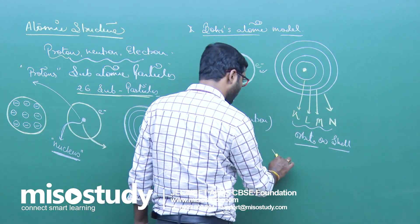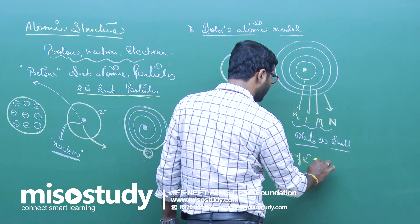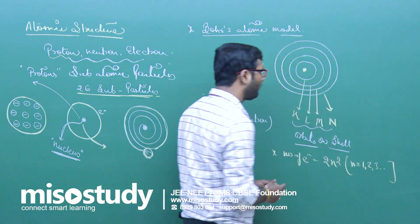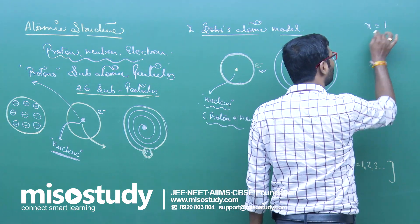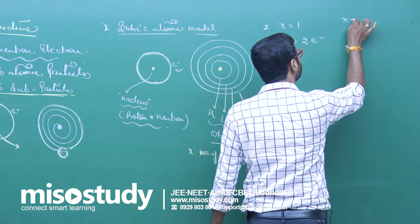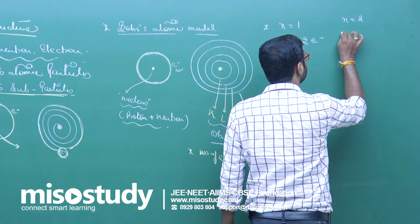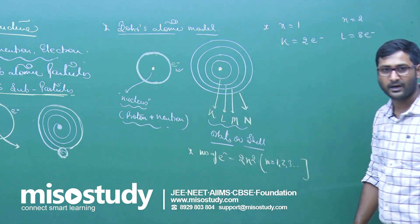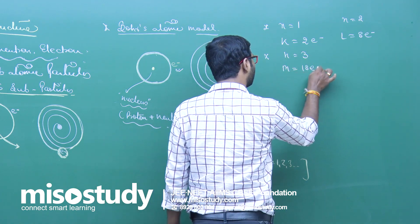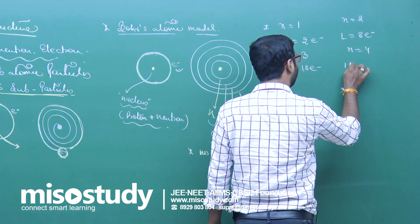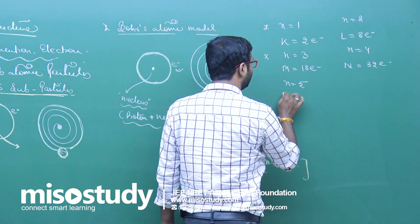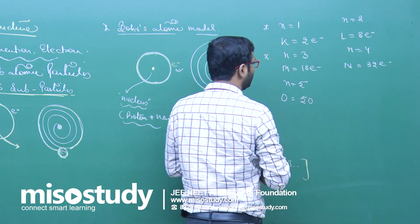Each orbit has a fixed number of electrons. The formula is: number of electrons equals 2N squared, where N equals 1, 2, 3, and so on. For K shell, N equals 1, so K has a maximum of 2 electrons. For L shell, N equals 2, so L has 8 electrons — 2 into 2 squared equals 8. For M shell, N equals 3, so M has 18 electrons. For N shell, N equals 4, so N has 32 electrons.